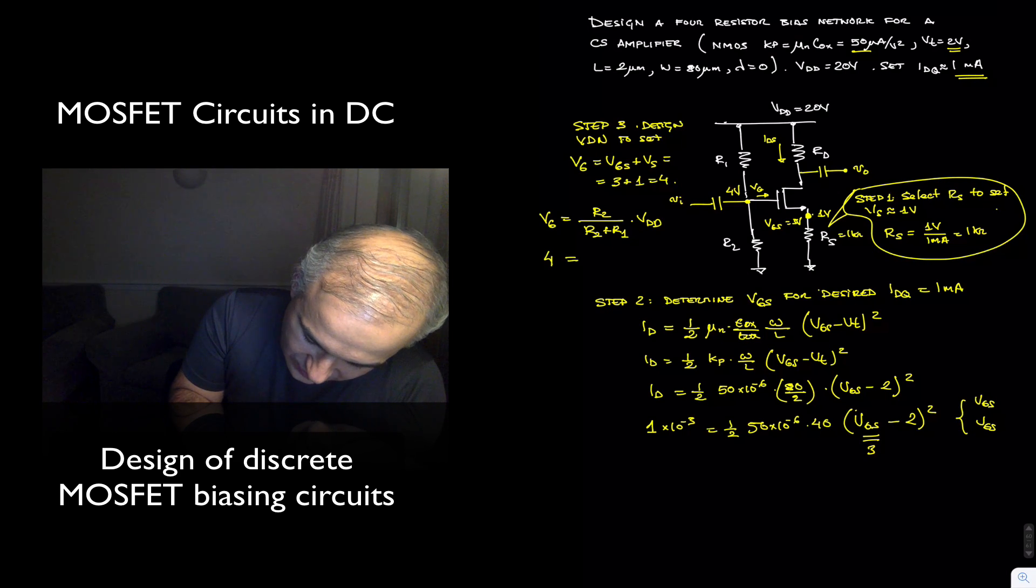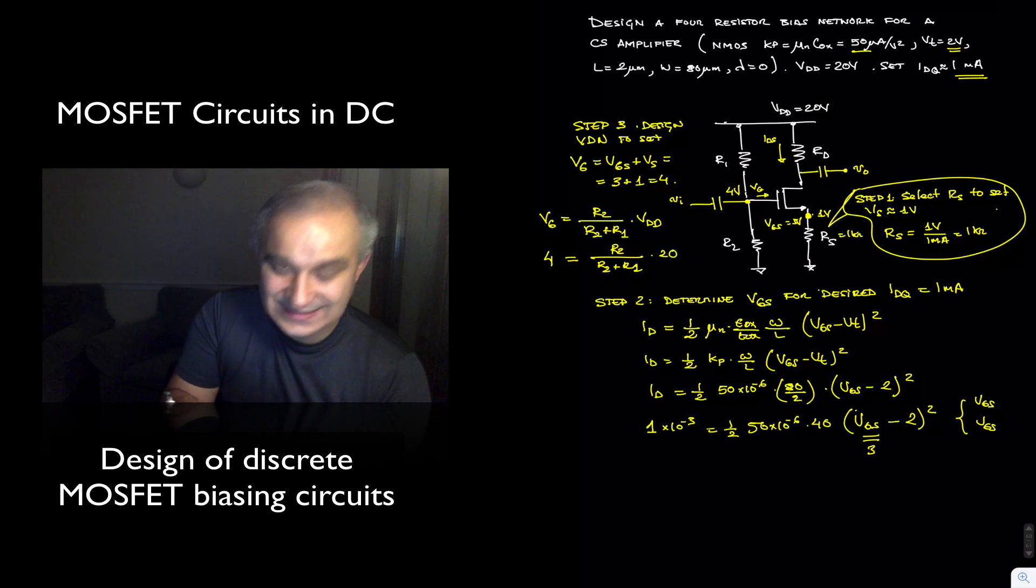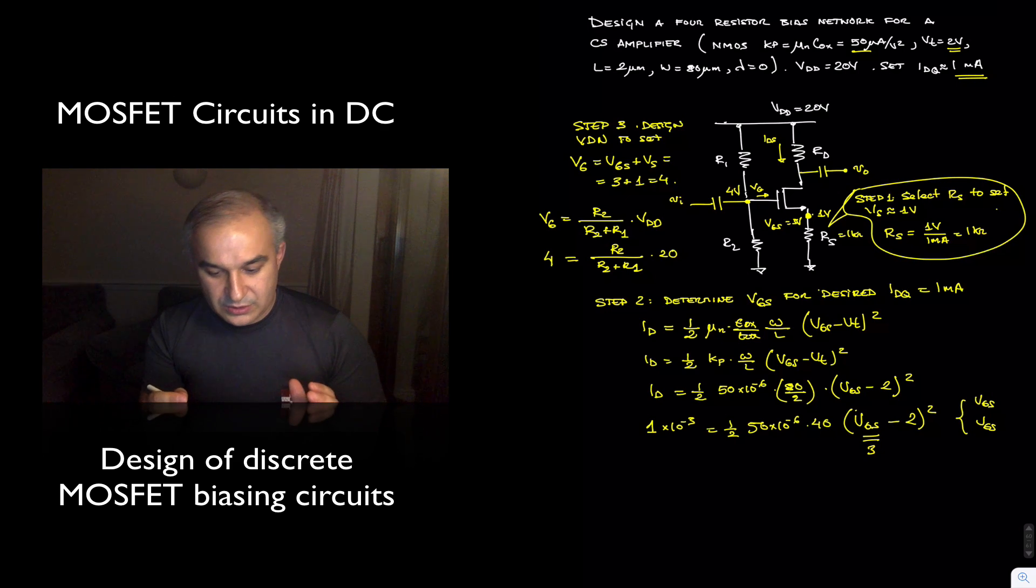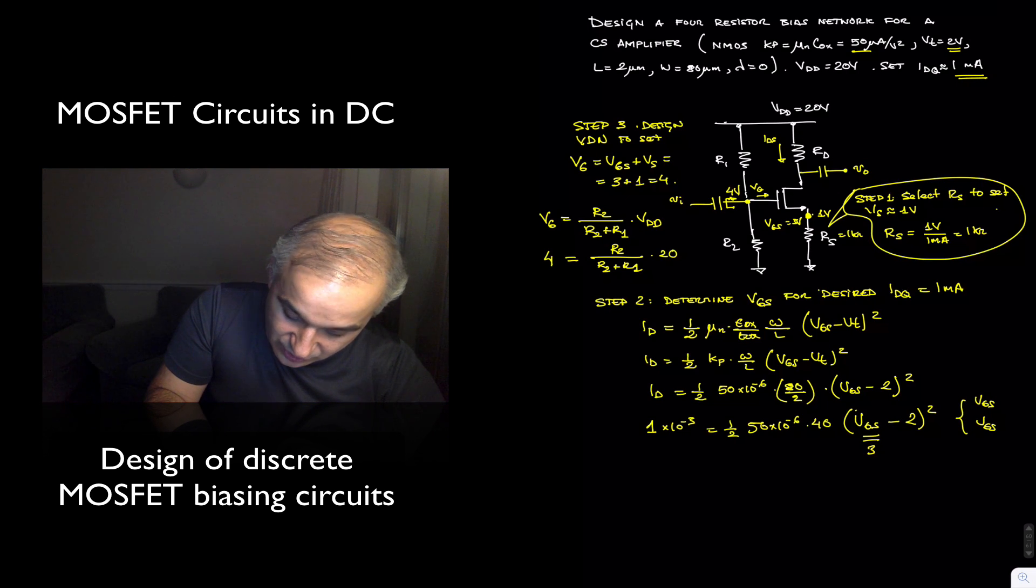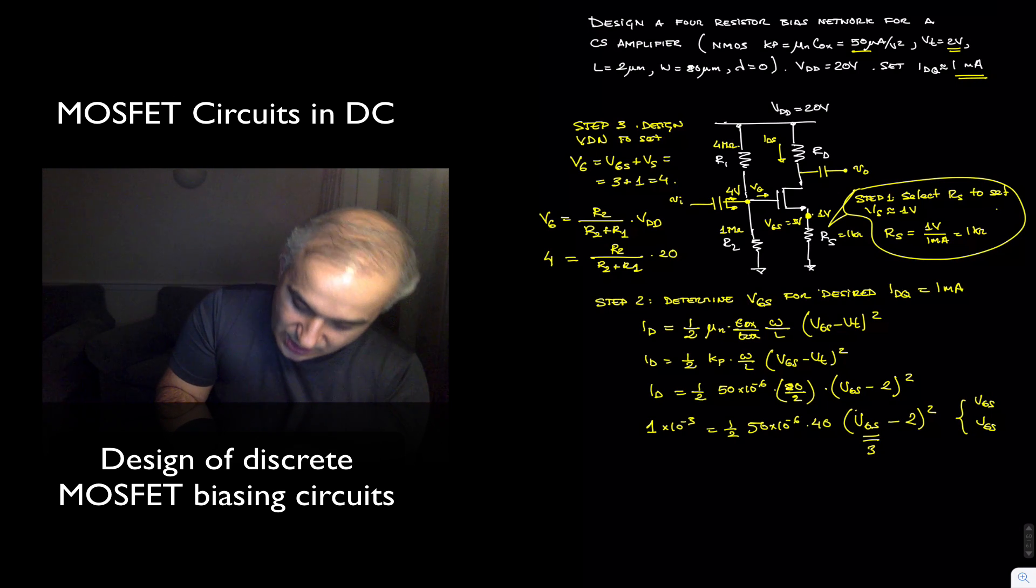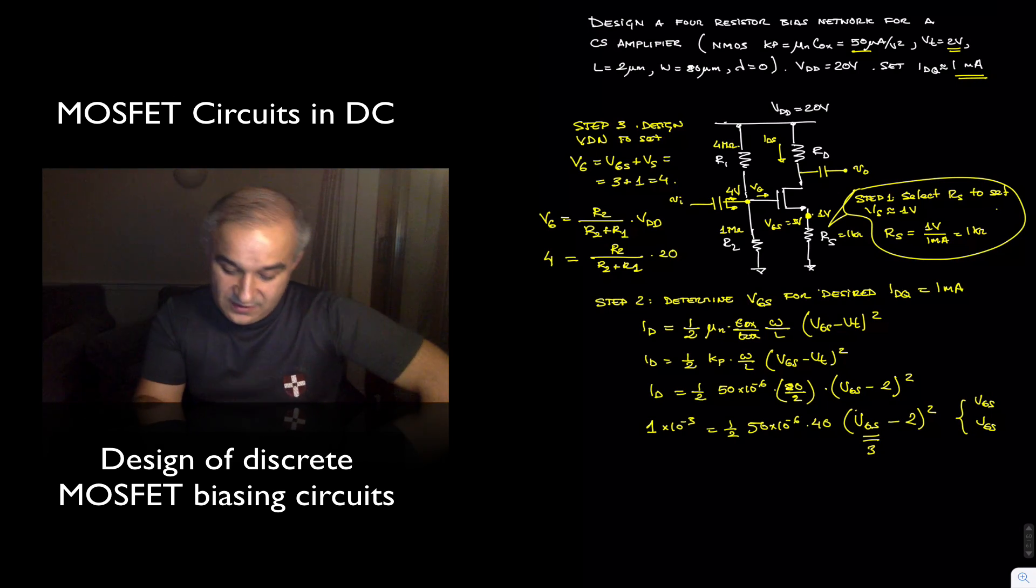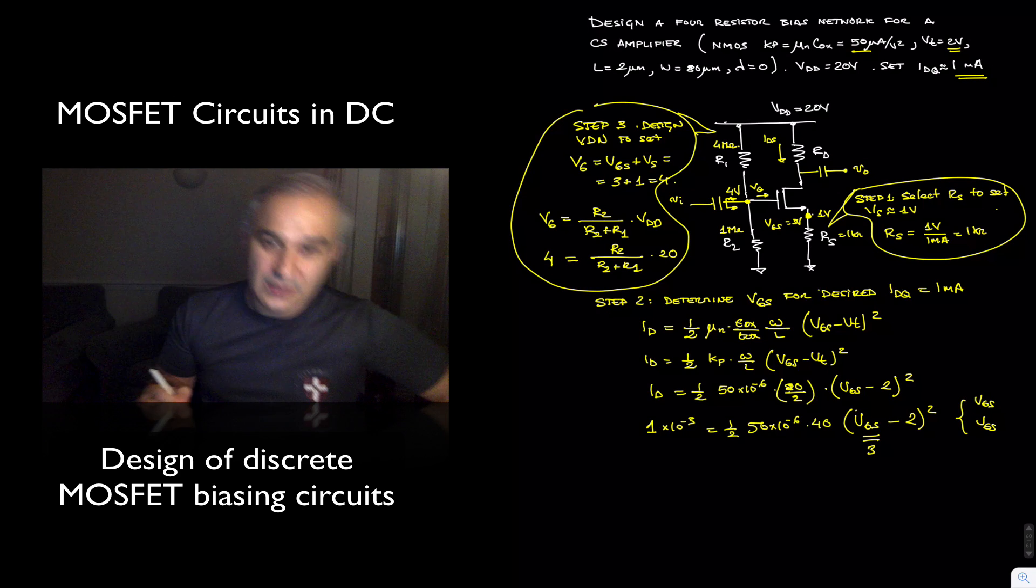And so we have 4 volts that we want and we are going to select R2 and R1 as desired here. If we have a common source amplifier, like in this case, this is going to be the input impedance; the parallel combination of the two is going to be the input impedance of the amplifier looking from here. So we are going to design it for that purpose. For instance, in this case, we could choose 1 mega ohm and 4 mega ohm. This will do it. So we have 1 divided by 5, one-fifth. So 20 over 5 is going to give us the 4 that we want. This will meet the requirements.